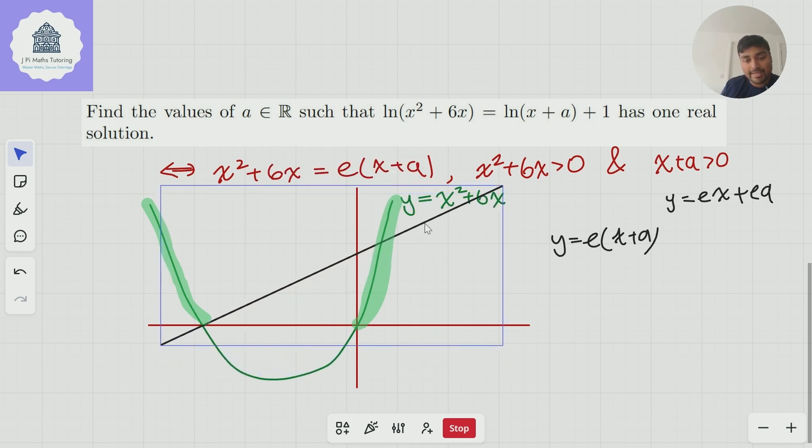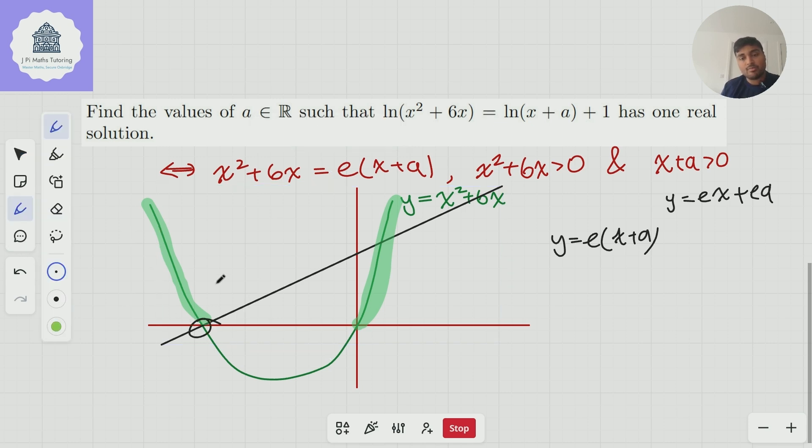All the way up until I hit down here. So when I bring the line up until I hit this bit here. And so the question is well what is this value? Well we know that that's -6. And so if the line y = e(x + a) has an x intercept of -6, that means that a must be 6.